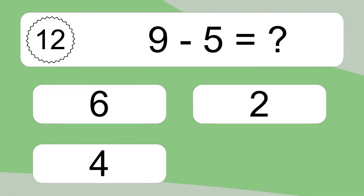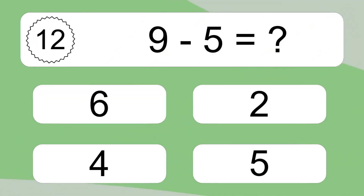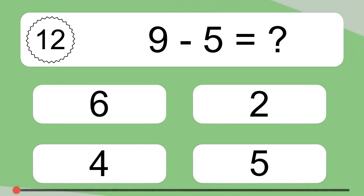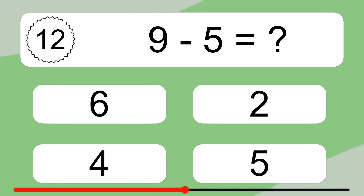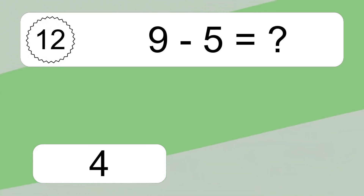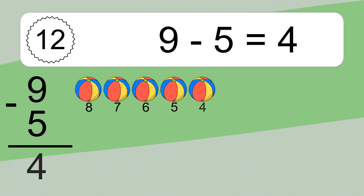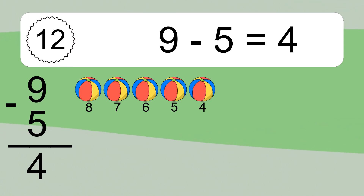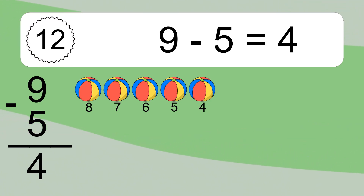9 minus 5 equals what? 9 minus 5 equals 4. Let's count it: 8, 7, 6, 5, 4.